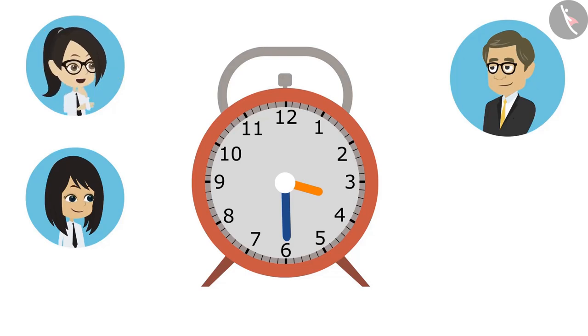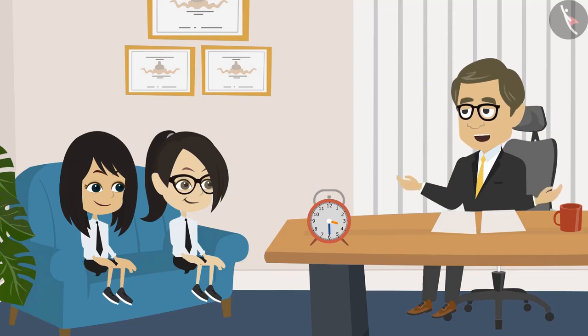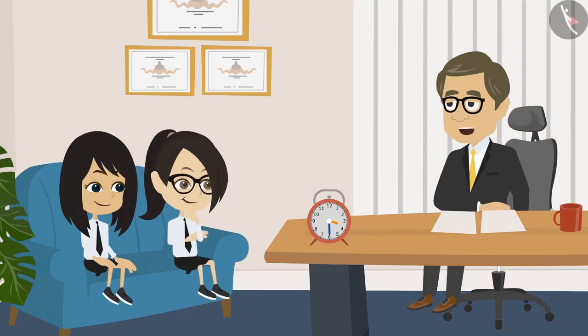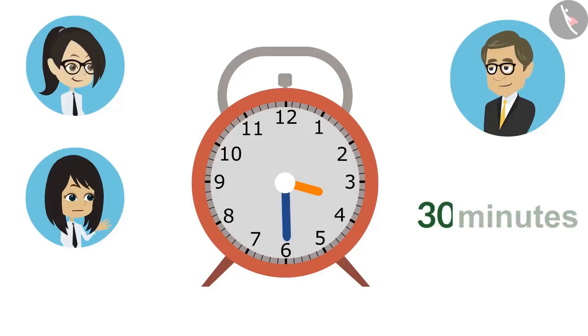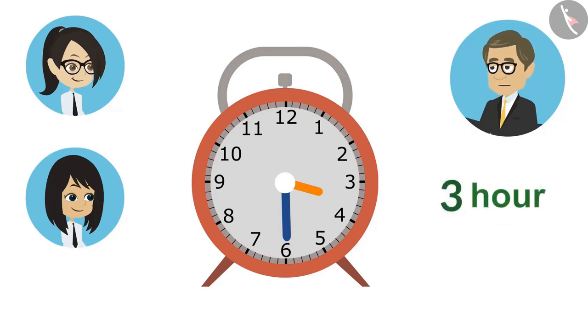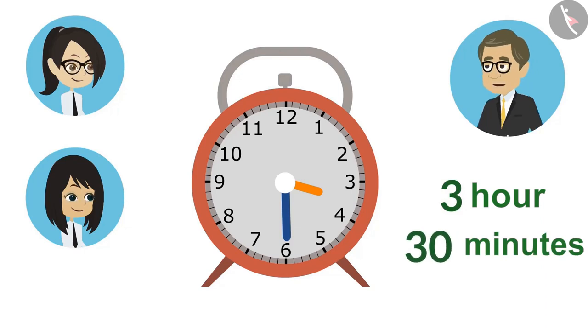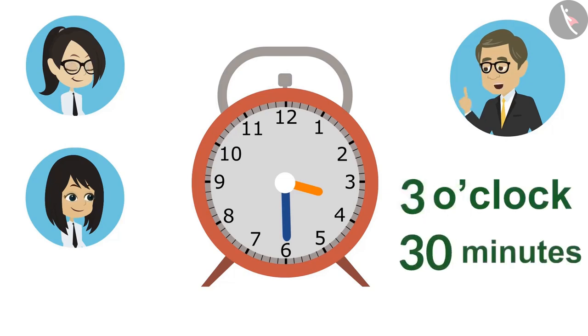But sir, it is understood from this clock that at this time it is more than 3 and less than 4. But how much more than 3 is the question now? To tell how many minutes are more than an hour, the minute hand is read. Neha, you read the minute hand. Sir, it is 30 minutes. It means that it is already 3 o'clock and it is 30 minutes more than 3 o'clock. If we read the time from this clock, we will say that it has been 30 minutes past 3.